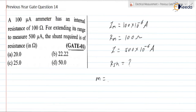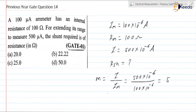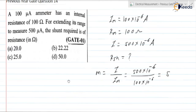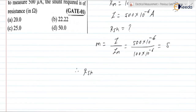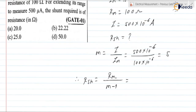We can find the multiplying power or multiplying factor: m is equal to I upon Im. So it is equal to 500 into 10 to the power minus 6 divided by Im which is 100 into 10 to the power minus 6, giving m equal to 5. From this we can write Rsh is equal to Rm upon m minus 1, which is 100 upon 4, giving 25 ohm. So the required Rsh is 25 ohm.